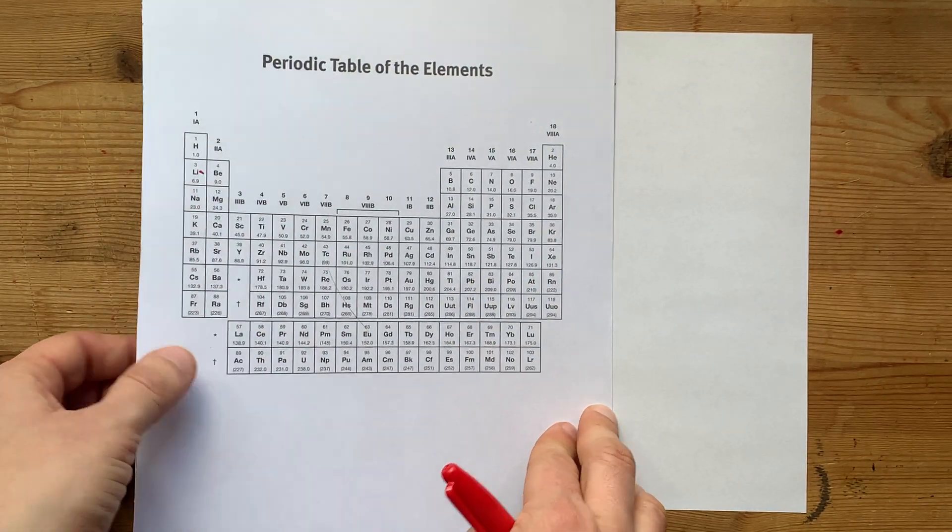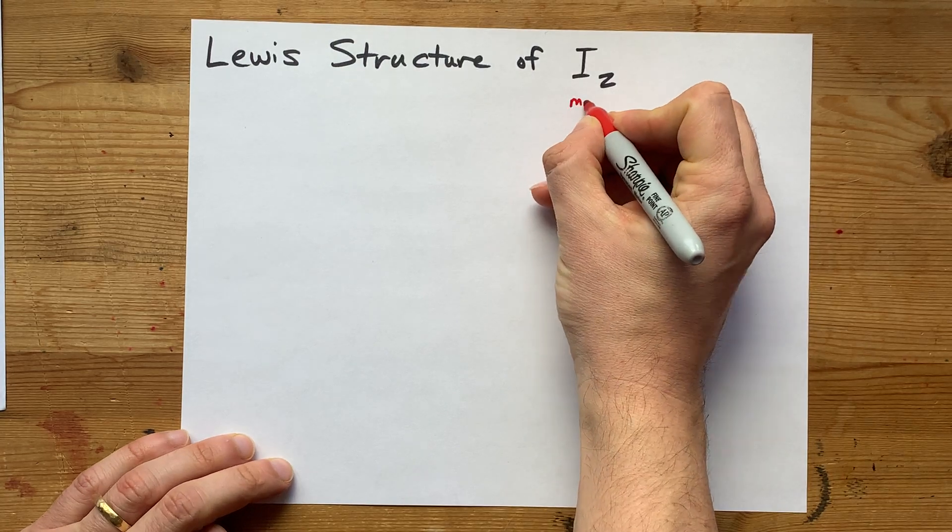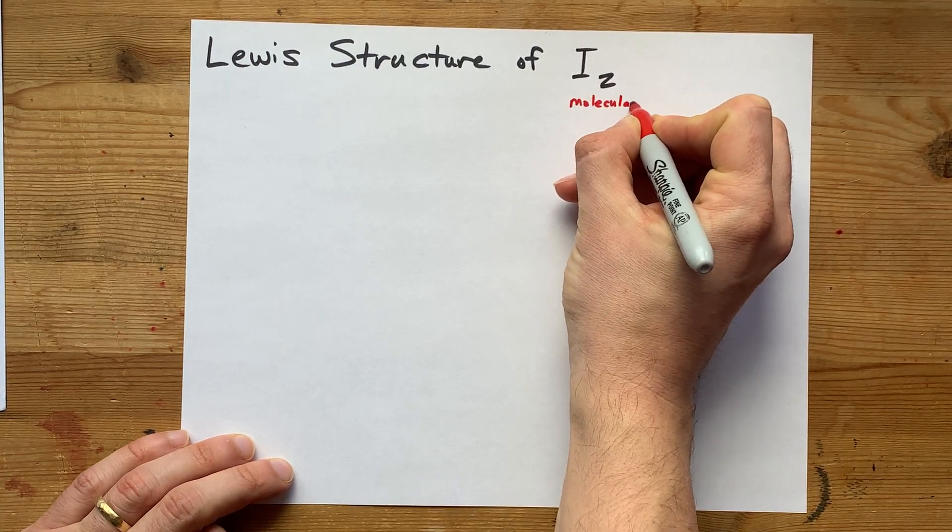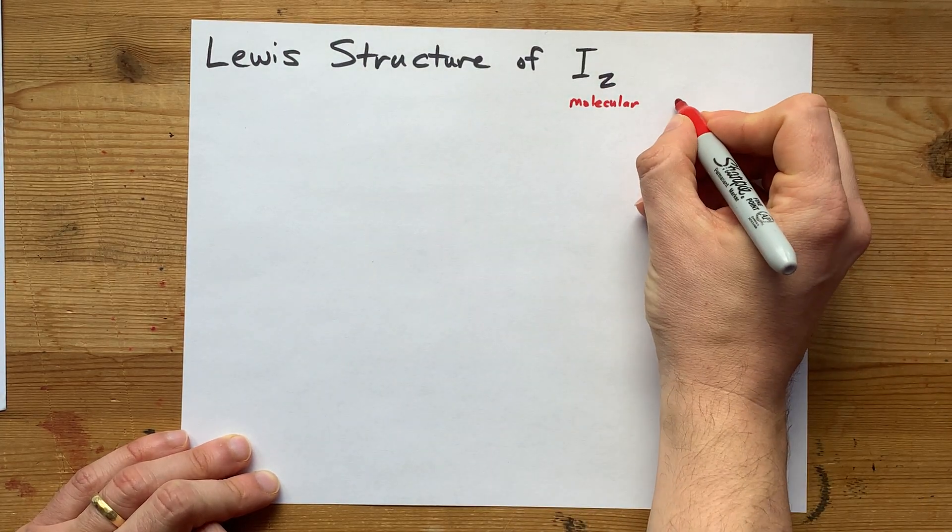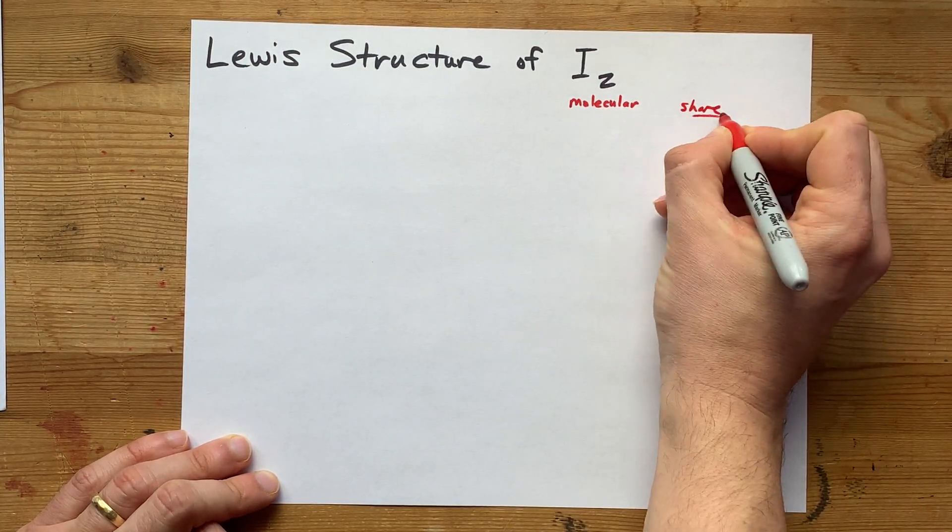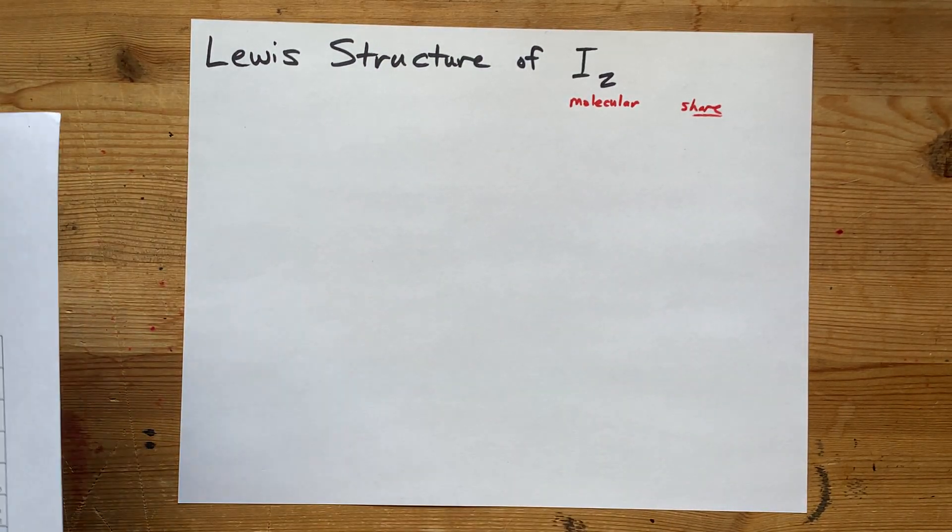In fact, all the halogens are non-metals. And so when two non-metals bond with each other, we're going to end up with a molecular compound. I mean that to say it's not ionic, and we're going to be sharing electrons from one atom to another, as opposed to it being transferred from one to another.